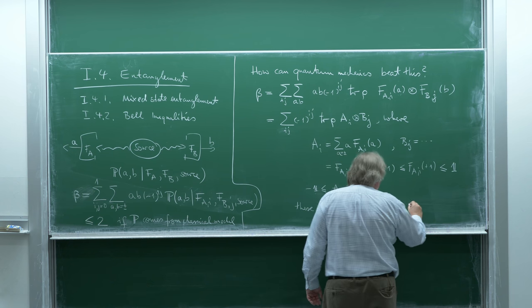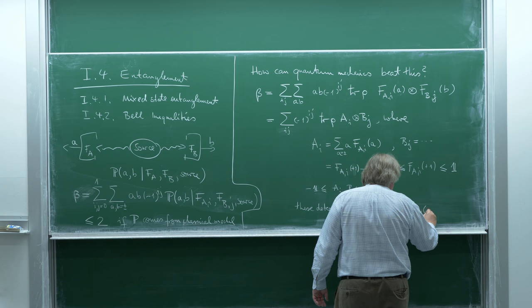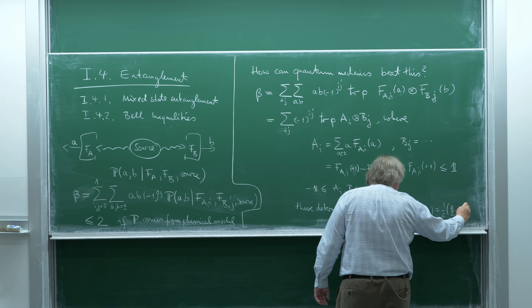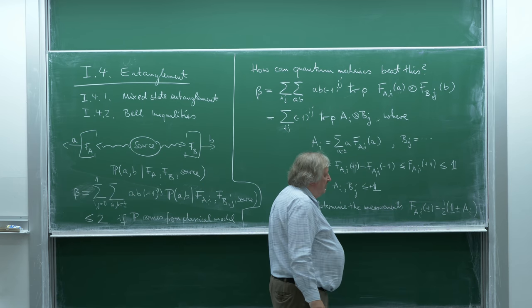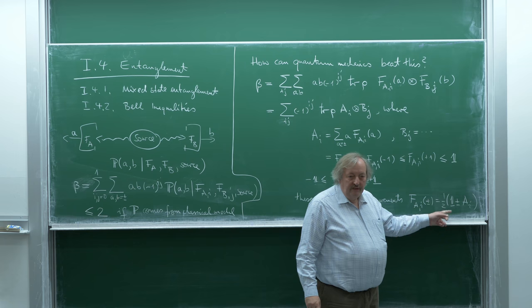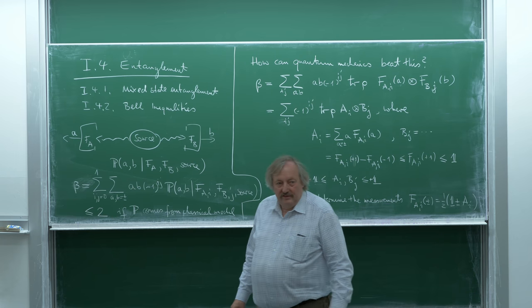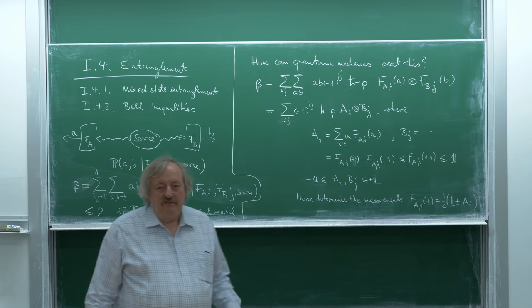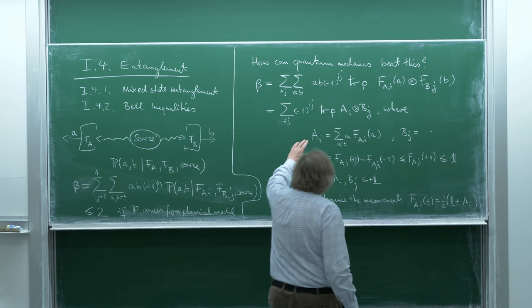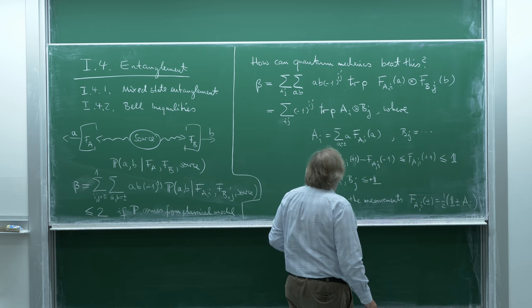Because A_i is between 0 and 1, it is a positive operator, and the two outcomes clearly add up to 1. This is another way of seeing that all the information about the measurements sits in these operators A_i.